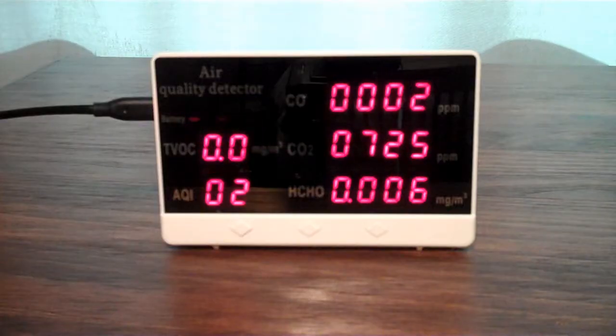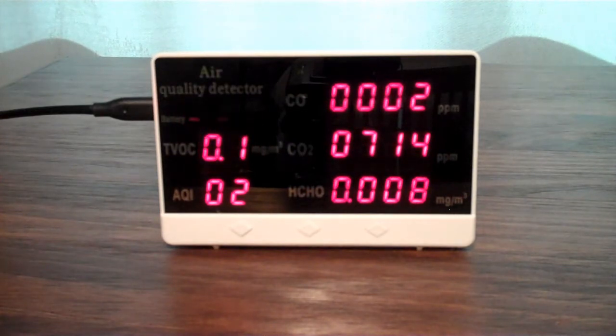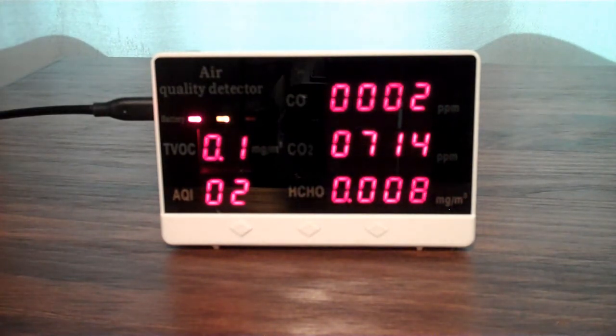There's also formaldehyde, HCHO, and you're not supposed to go above 0.01 parts per million. When I started blowing on it, this thing went off the scale. But earlier it was like 0.03, perfectly acceptable level.